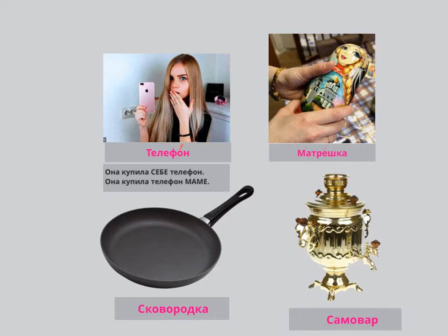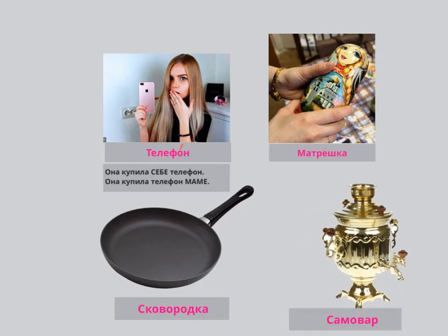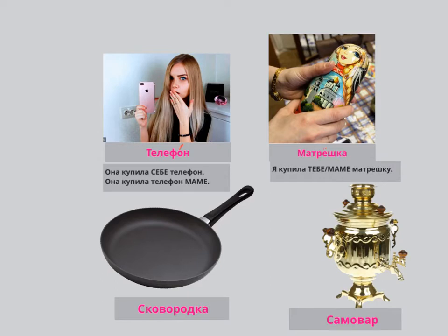МАТРЁШКА — when you go to Russia and come back to the UK, you say Я КУПИЛА МАТРЁШКУ. МАТРЁШКУ is accusative — you buy something, that's accusative; for somebody, that's dative. Я КУПИЛА ТЕБЕ МАТРЁШКУ. Our focus is on ТЕБЕ, but we can substitute it with any name — МАМЕ, СЫНУ. Я КУПИЛА ТЕБЕ / МАМЕ / СЫНУ МАТРЁШКУ.